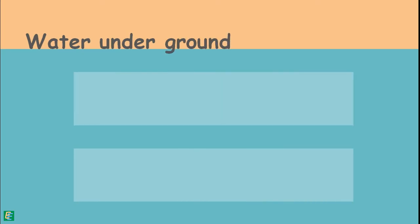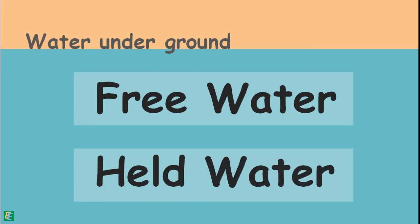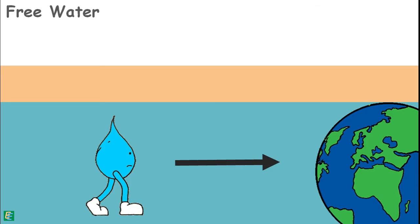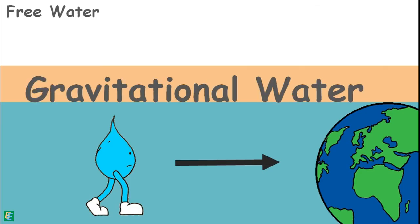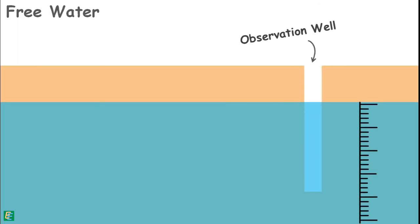This water under the ground surface exists in two forms: free water and held water. Free water is ground water that moves inside the soil under the influence of gravity, so it is also called gravitational water. It completely fills and saturates the voids present in the soil. To measure the level of free water underground, we make observation wells into the ground. The level up to which the underground water rises in the well is the level of free water, and this level is called the ground water table.